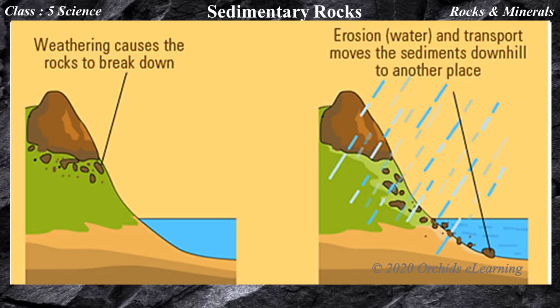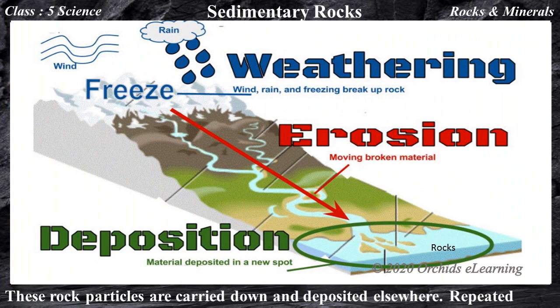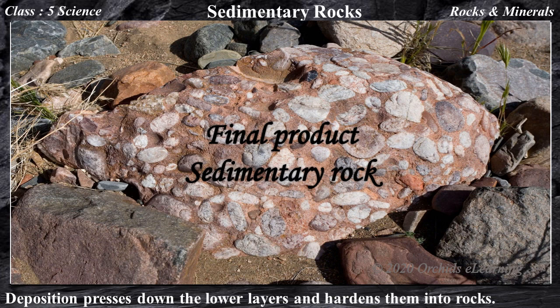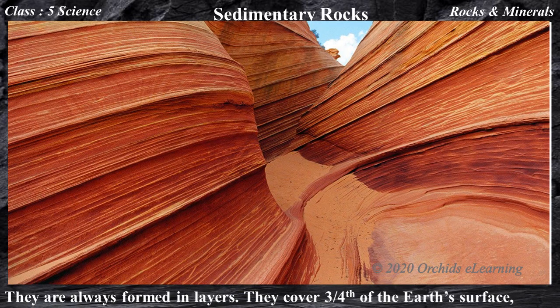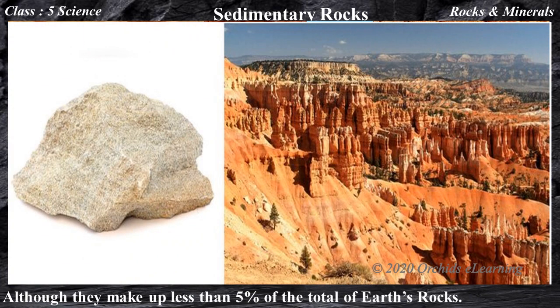Sedimentary rocks: Rain, wind, and rivers flowing down mountains wear away rocks on mountains. These rock particles are carried down and deposited elsewhere. Repeated deposition presses down the lower layers and hardens them into rocks. Such rocks are called sedimentary rocks. They are always formed in layers. They cover three-fourths of the earth's surface, although they make up less than 5% of the total of earth's rocks.